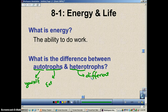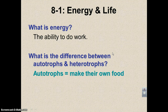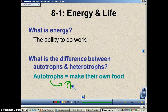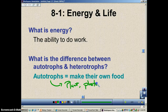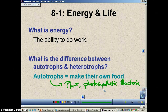A heterotroph gets its food from a different organism. Autotrophs make their own food — we know autotrophs better as plants, photosynthetic bacteria, and some of the protists. Euglena, for example, is a protist that can do photosynthesis, as well as your algae.